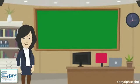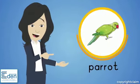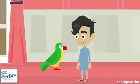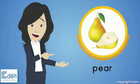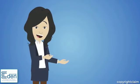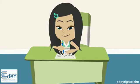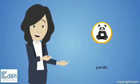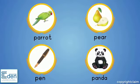Let's meet with my friends. This is a parrot. Parrot is a pet bird. This is a pear. Pear is a fruit. This is a pen. We write with pen. This is a panda. Panda is a beautiful animal.